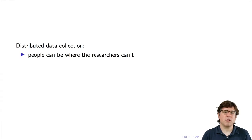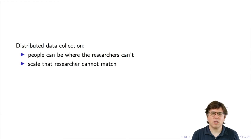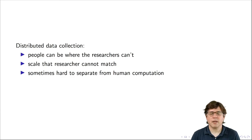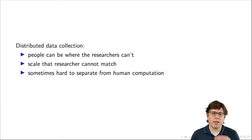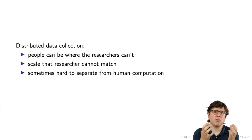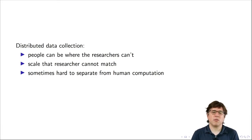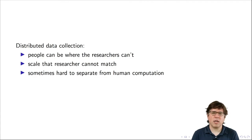Distributed data collection allows researchers to collect data sometimes where they couldn't go — where the volunteers or the people they're working with are able to be places where researchers can't be, at a scale that researchers cannot match. It's sometimes hard to separate distributed data collection from human computation. The way I like to think about it is: in human computation, people are adding labels onto existing measurements of the world, like pictures or text. With distributed data collection, those people are actually collecting those measurements — going out, taking pictures, or making observations.